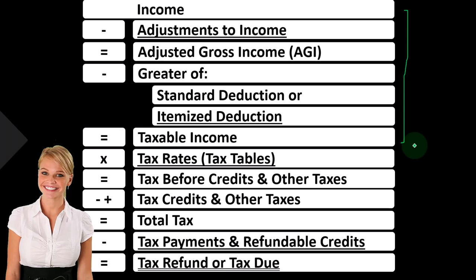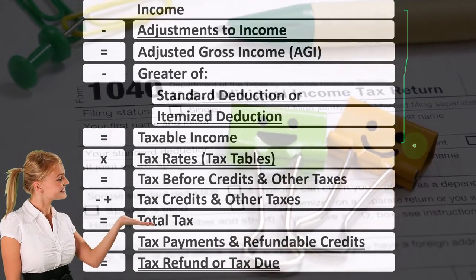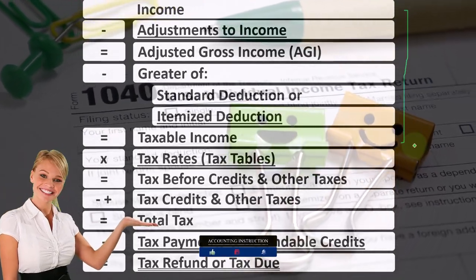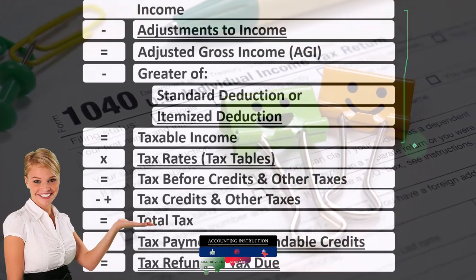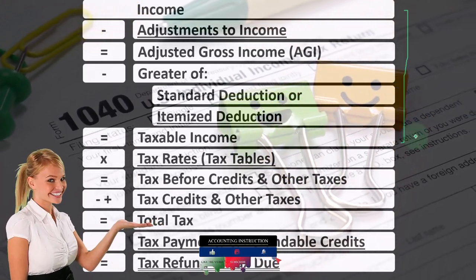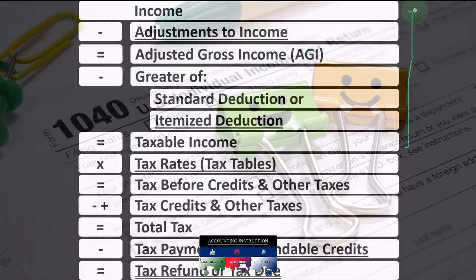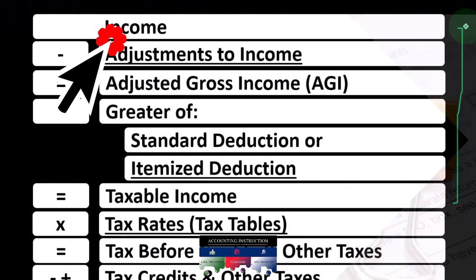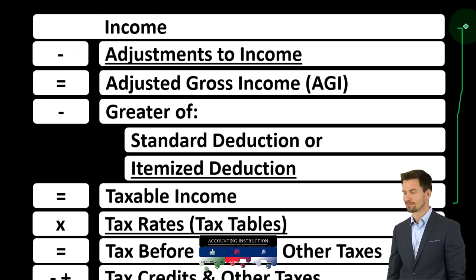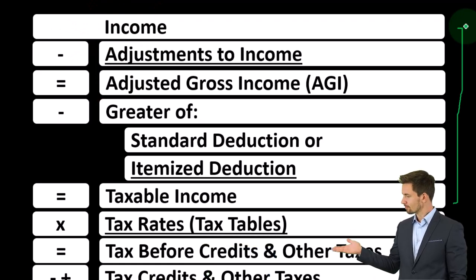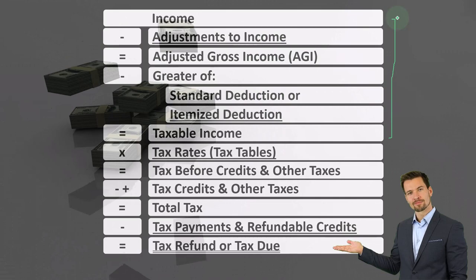Taxable income — our goal being the opposite of normal goals because it's taxes — is to have taxable income as low as possible. When looking at line one, we want to determine: is something income, and if it is, do we have to include it as taxable income? We're talking about Social Security benefits at this point.